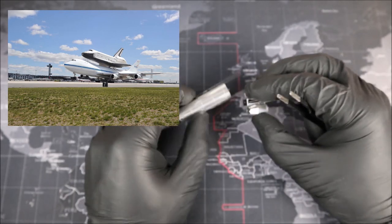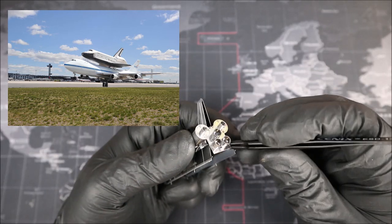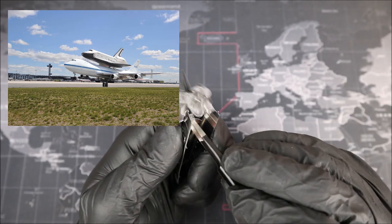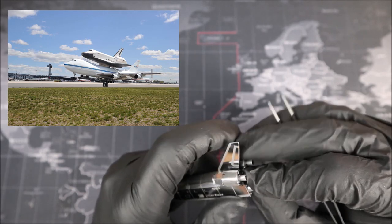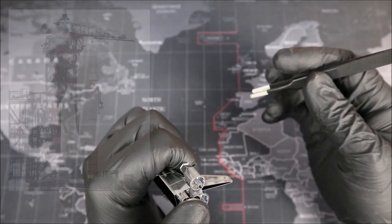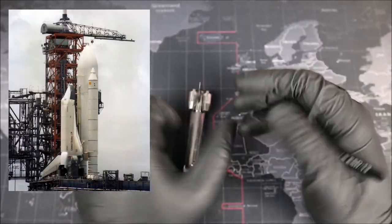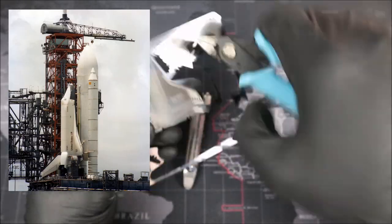After all the testing was done, the Enterprise had been intended to be refitted for orbital flight, to become the second space-rated orbiter in the NASA fleet. During the construction of the space shuttle Columbia, details of the final design changed, making it similar and less costly to build the Challenger around a body frame that had been built as a test article. The Enterprise was shafted.